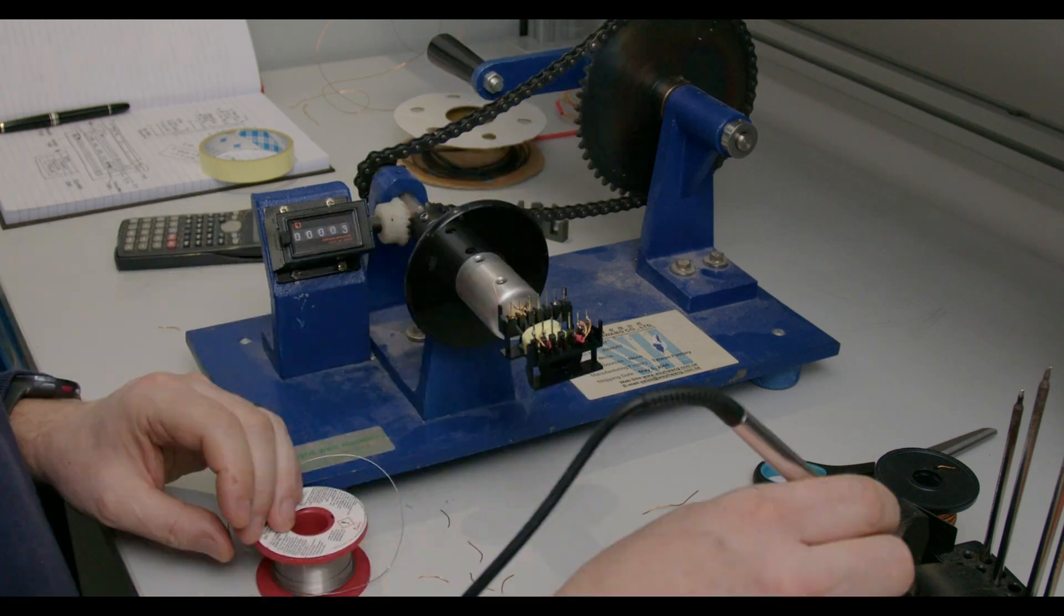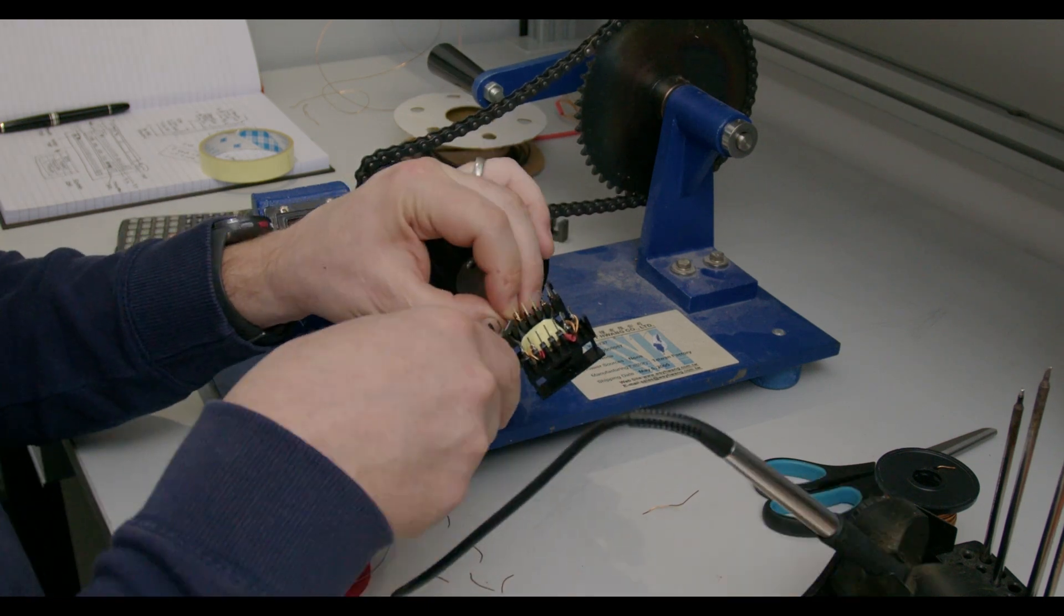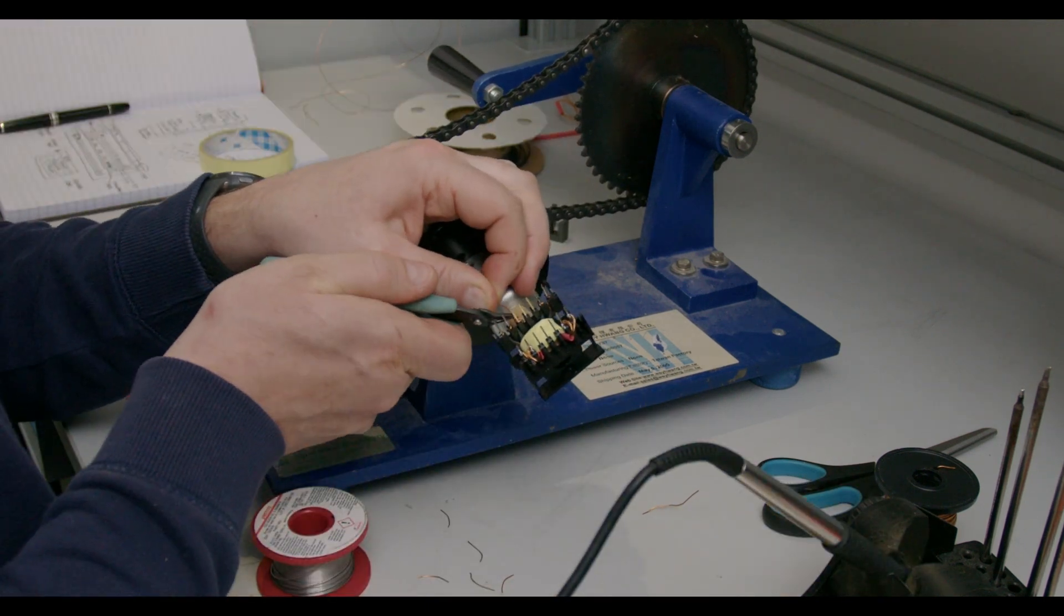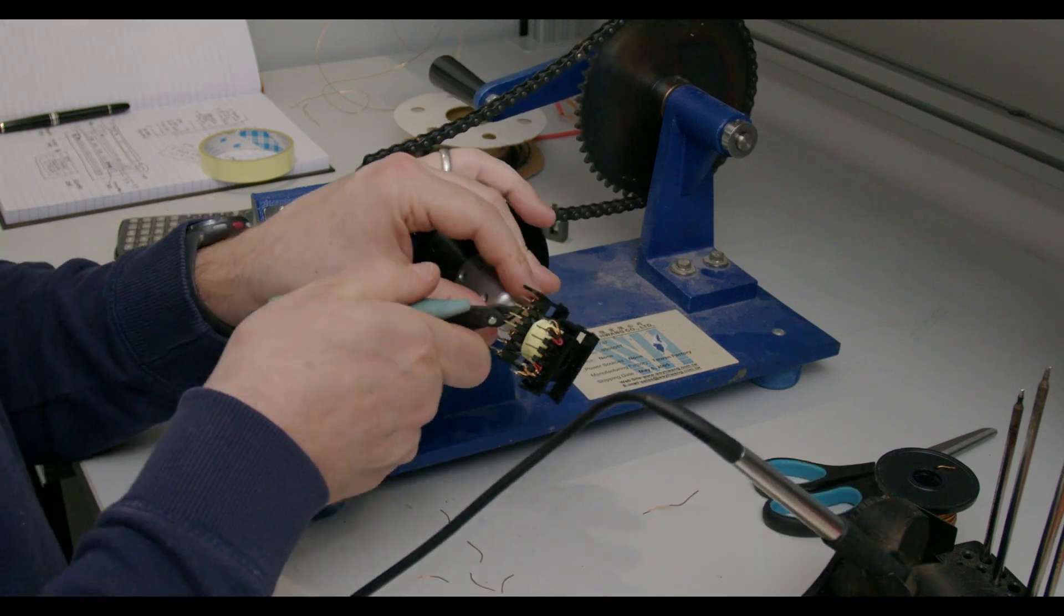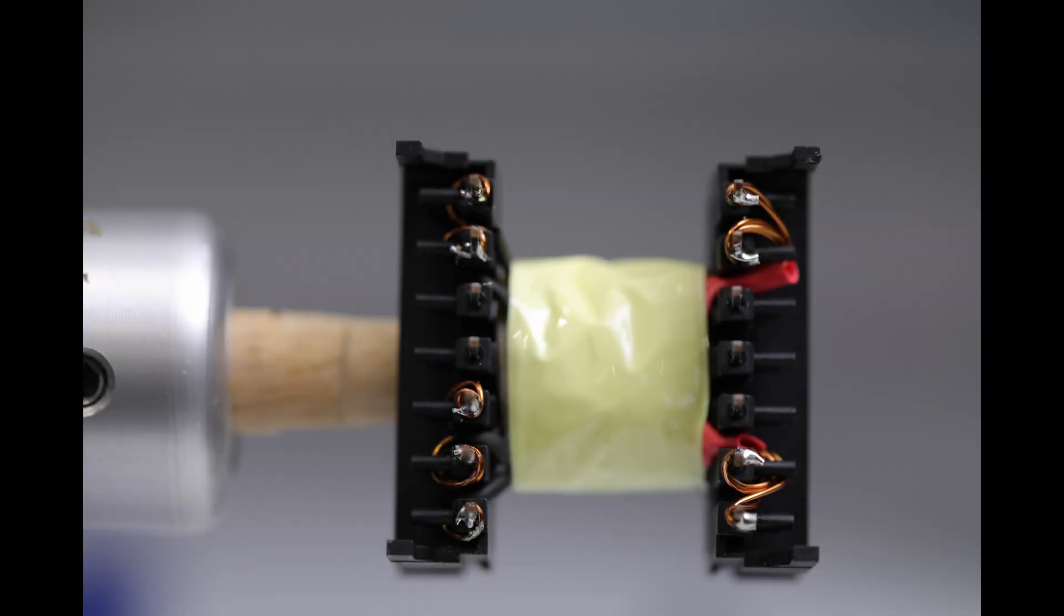Care must be taken not to overheat the transformer pins since the plastic bobbin can be damaged. Also be careful not to place too much force on the pins since the bobbin can snap. This is the prototype with the pins terminated.